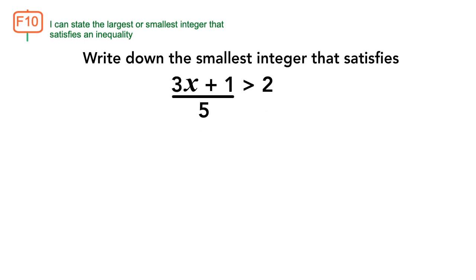Have a look at this question. Write down the smallest integer that satisfies 3x plus 1 over 5 is greater than 2. Using the skills we've covered in the previous videos, we first solve the inequality.